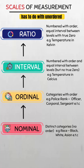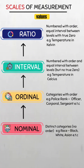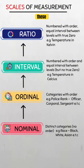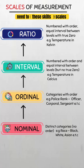To recap: nominal has to do with unordered categories. Ordinal deals with ordered categories but with unequal intervals. For the interval scale, we have ordered values and equal intervals but no true zero. And finally, the ratio scale has ordered values, equal intervals, and a true zero point. Understanding these scales helps you choose the right statistical tools and interpret data accurately. Now that you understand how data is measured, you will start recognizing these scales everywhere.